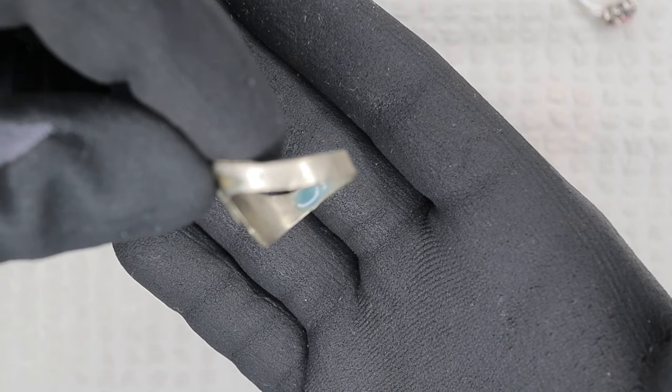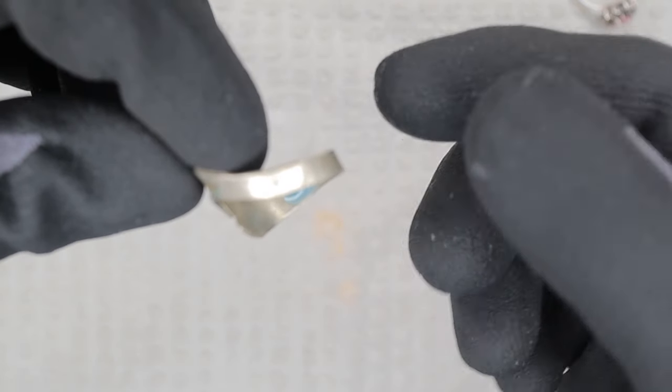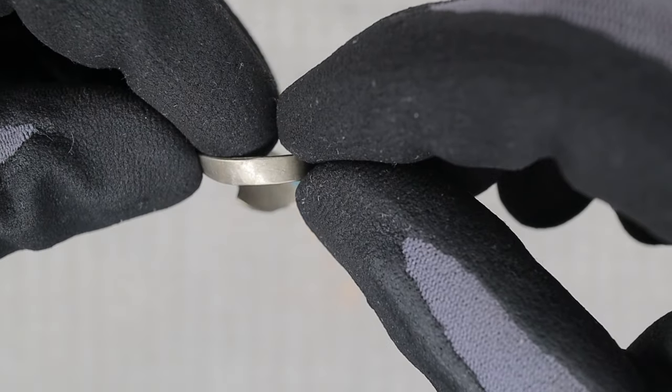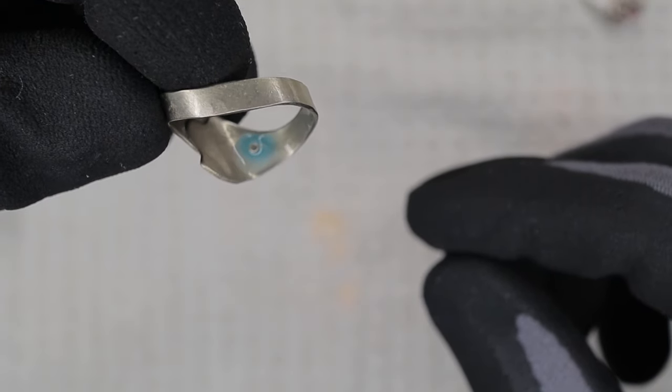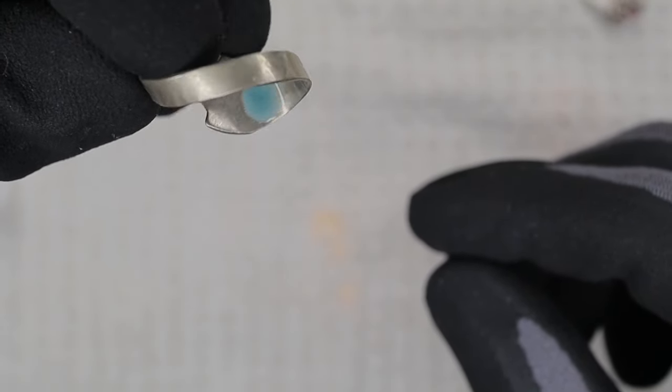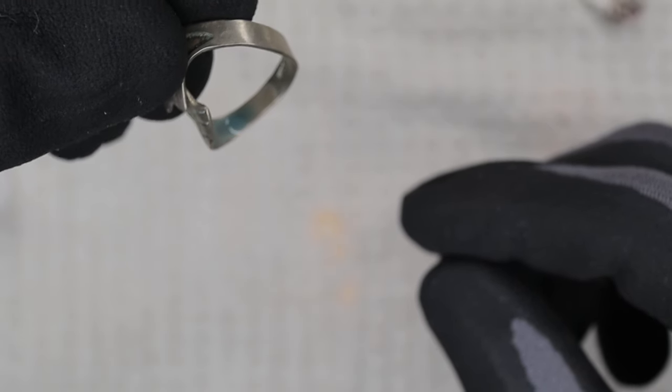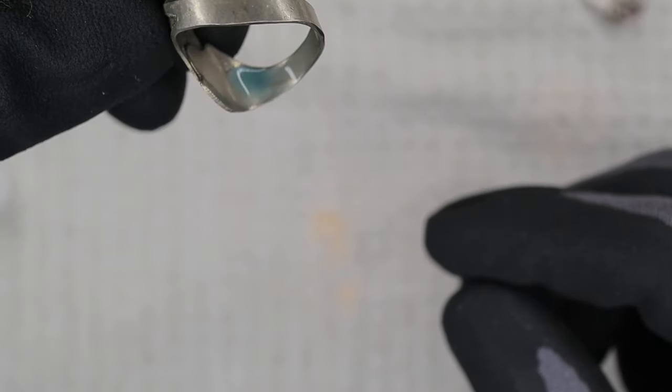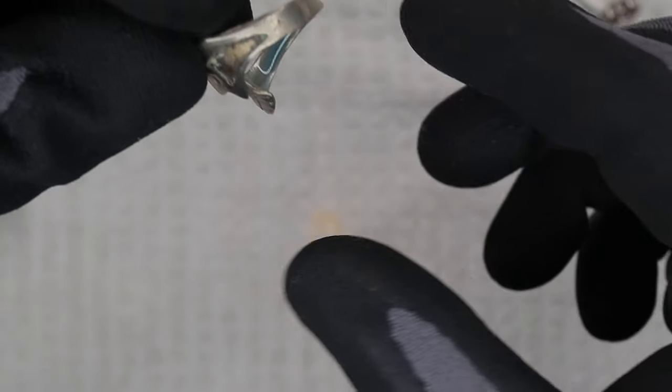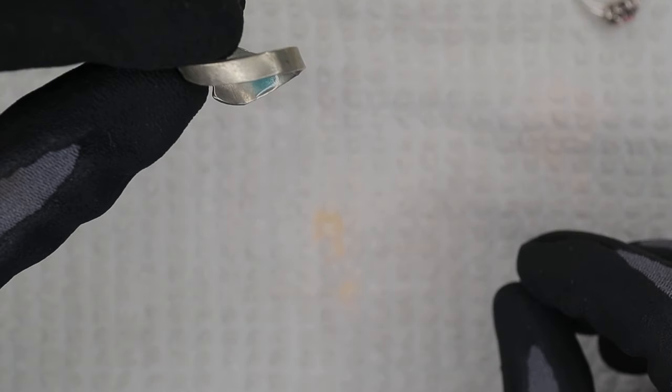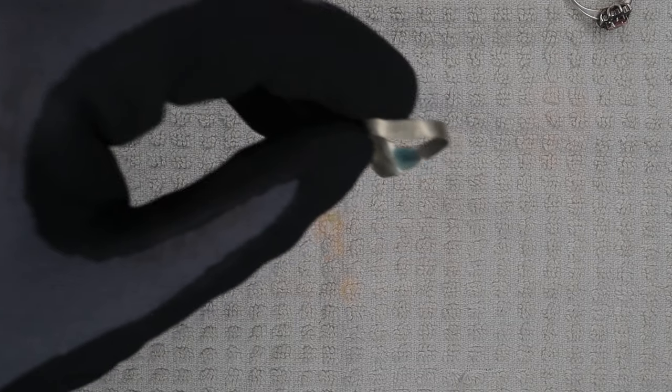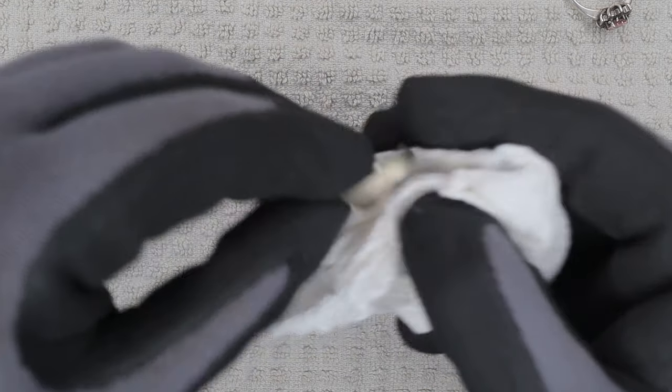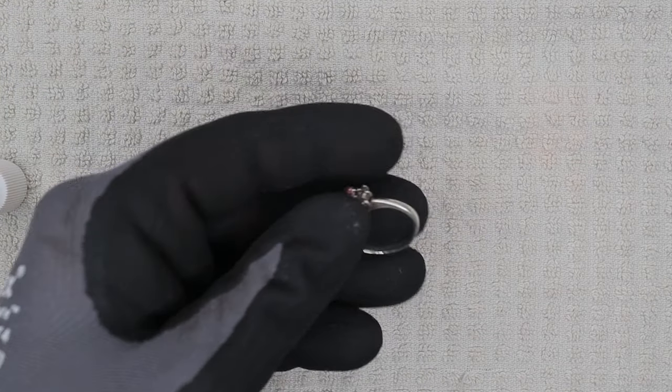As you can see, it's bubbling, it is turning blue. But that's not what we want to see. We want to see it turning red when it's directly on the ring because this is the silver acid and not the 18 karat gold acid.